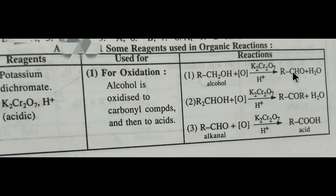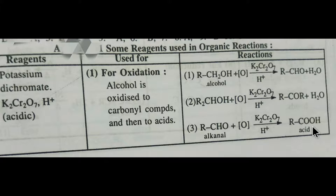Aldehydes and ketones are carbonyl compounds. If we further oxidize an aldehyde — such as methanal, ethanal, or propanal — with this reagent, we get a carboxylic acid, such as methanoic acid, ethanoic acid, or propanoic acid. So alcohol is first oxidized to a carbonyl compound, then further to a carboxylic acid.